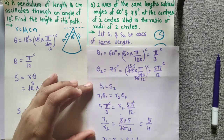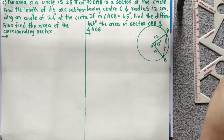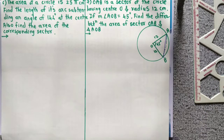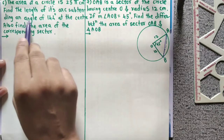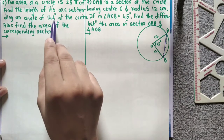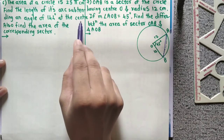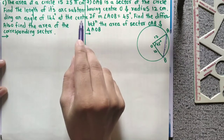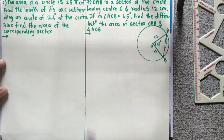I hope you understand. Now let's proceed to next question, question number 6: The area of a circle is 25 pi cm square. Find the length of its arc subtending an angle of 144 degrees at the center, and also find the area of the corresponding sector.